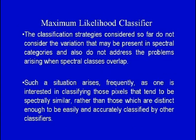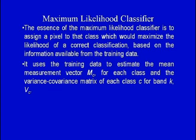The maximum likelihood classifier addresses the variation present in spectral categories and the problem of spectral class overlap. The essence is to assign a pixel to that class which maximizes the likelihood of a correct classification based on the training data. It uses training data to estimate the mean measurement vector mc for each class and the variance-covariance matrix of each class c. It assigns pixel x to class c if and only if P(c) > P(i) for all other possible classes i.